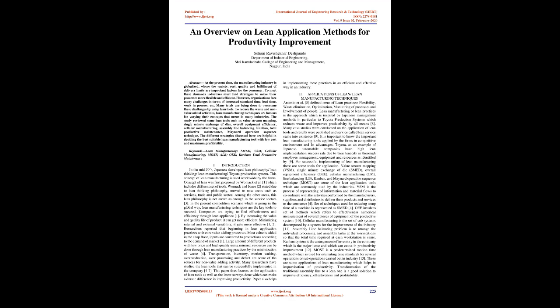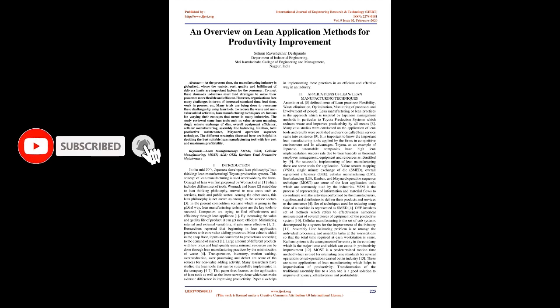Keywords: lean manufacturing, SMED, VSM, cellular manufacturing, MOST, ALB, OEE, kanban, total productive maintenance. In the mid-1950s, the Japanese developed lean philosophy, also known as lean thinking, lean manufacturing, or Toyota Production System. This concept is used worldwide by firms. The concept of lean was first proposed by Womack et al., which includes a different set of tools. Womack and Jones stated that lean thinking philosophy moved to new areas such as services, trade, and the public sector.